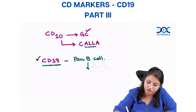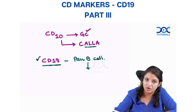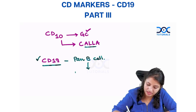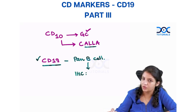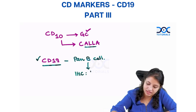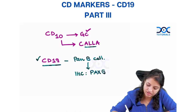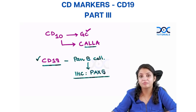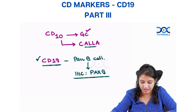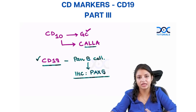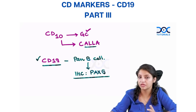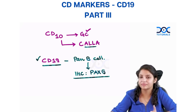A better marker of B cell which has now come up on IHC is PAX5. Remember, PAX5 is a marker of B cell which is a better marker for B cell than CD19 — it comes earlier and it's very specific.